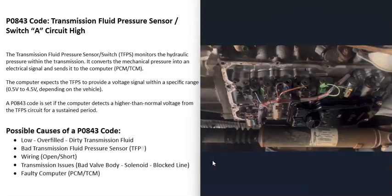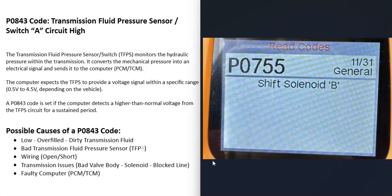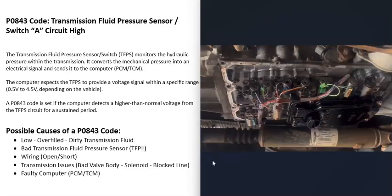The next possible cause is some kind of internal transmission issue — like a bad valve body, a bad solenoid, or possibly a blocked passage. Usually if something like that happens you'll be getting a lot of other codes, very likely shift solenoid codes and similar ones, because those components wouldn't be able to work and would trigger additional codes. But it is possible that there's some kind of internal transmission problem, so keep that in mind.